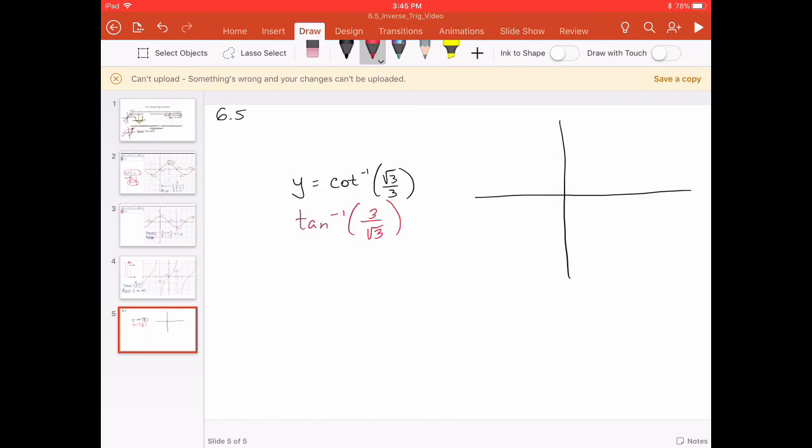For some scrap work, I would suggest taking 3 over √3 and rationalizing that by multiplying it by √3 over √3. The denominator will just give us 3. The numerator will give us 3√3. Dividing will give us just simply √3.